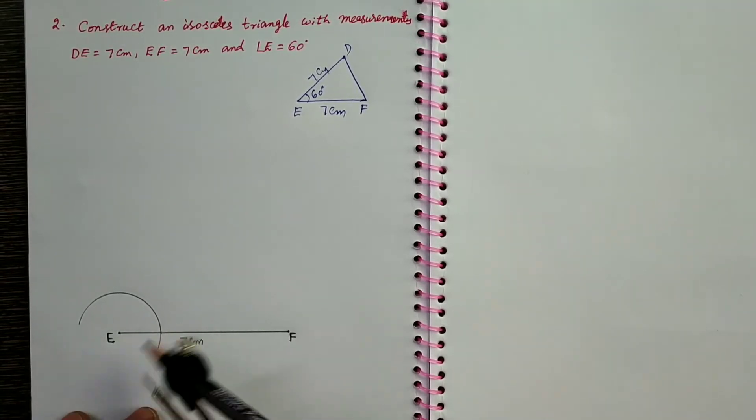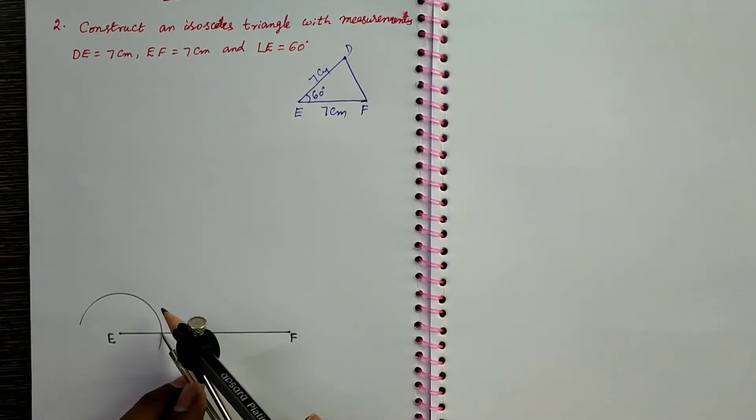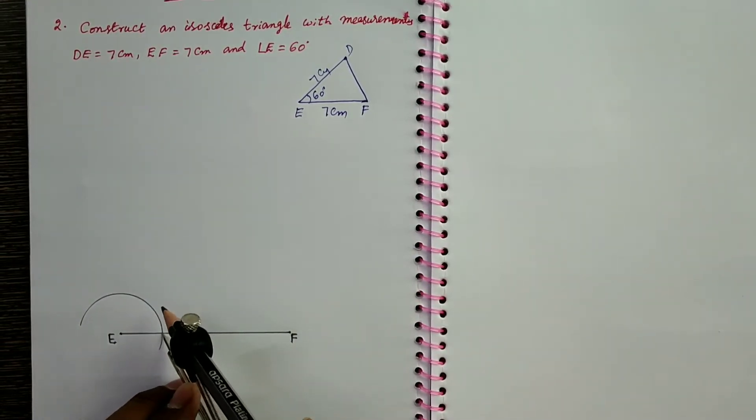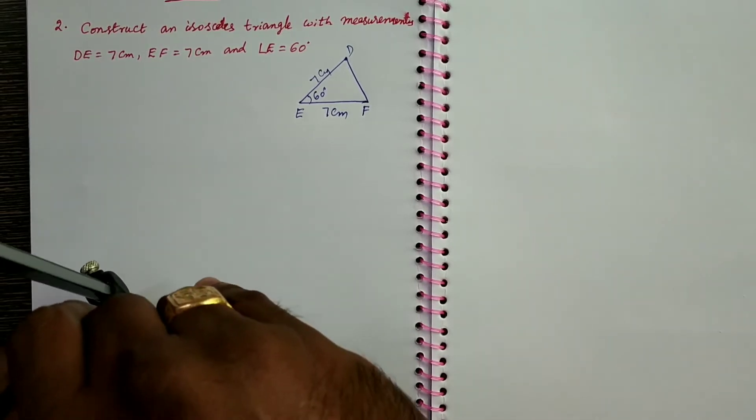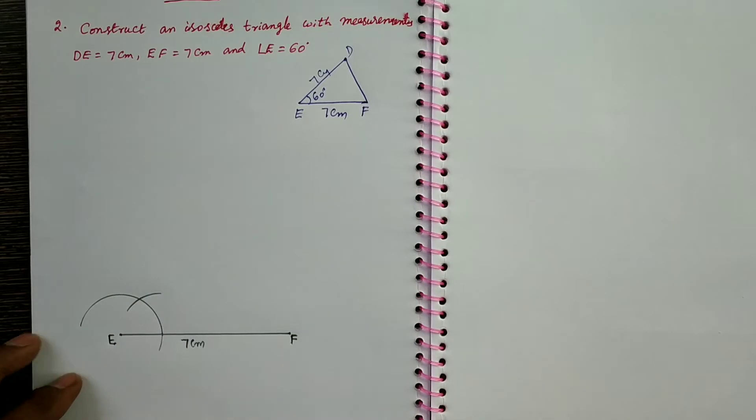Take the center as the intersecting point of line segment and this arc. Keep carefully and draw another arc. It cuts the previous arc at 60 degrees.